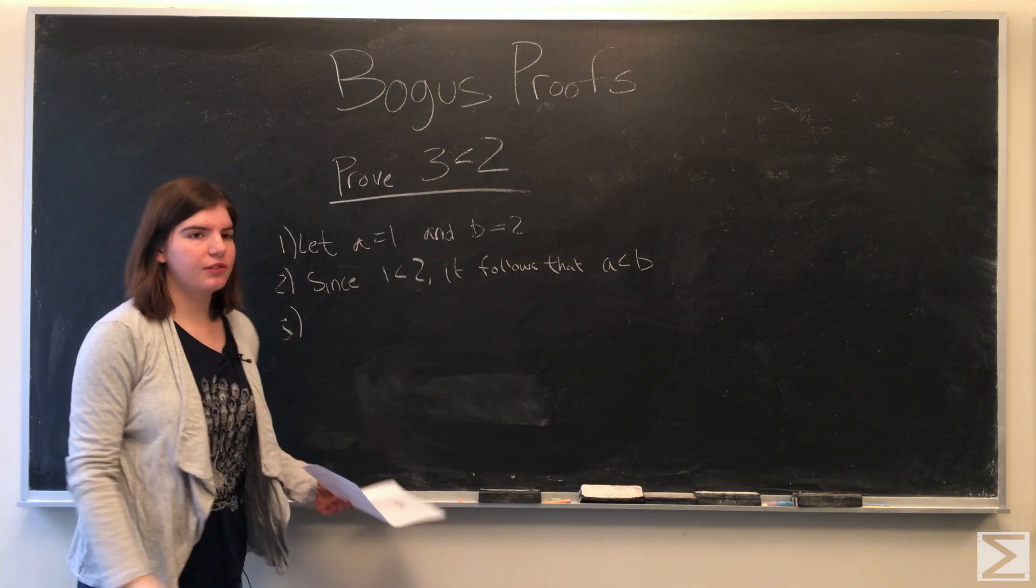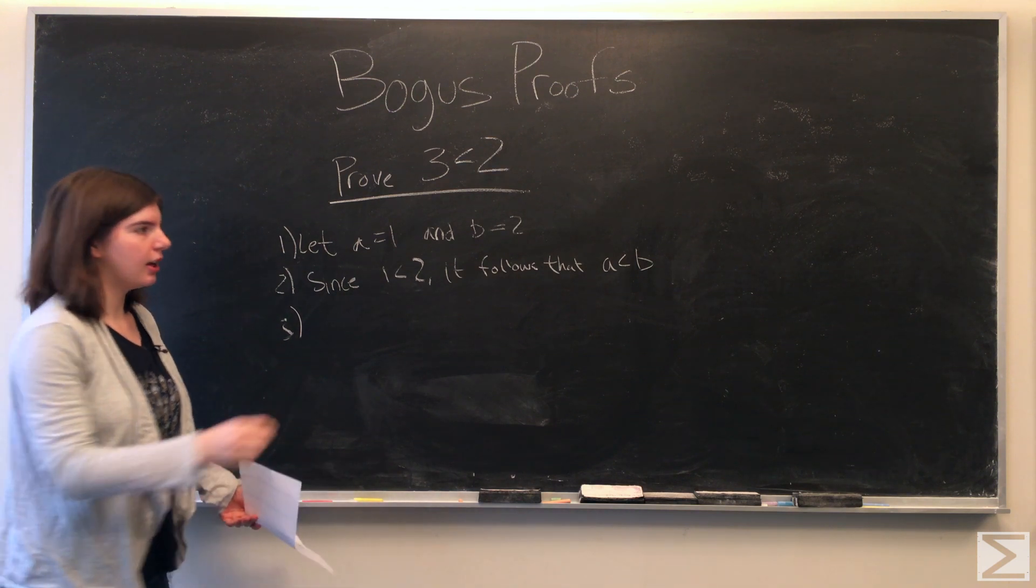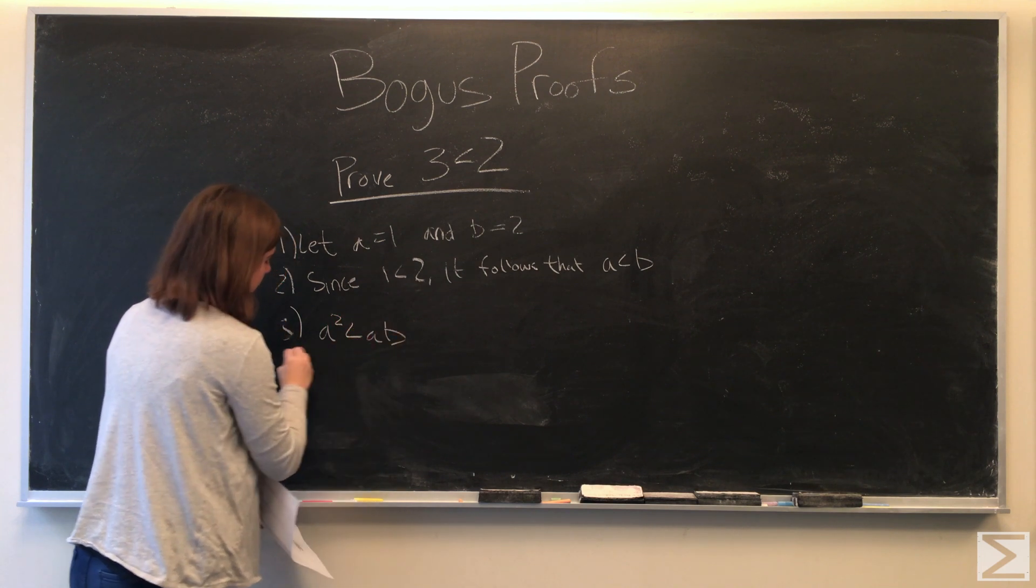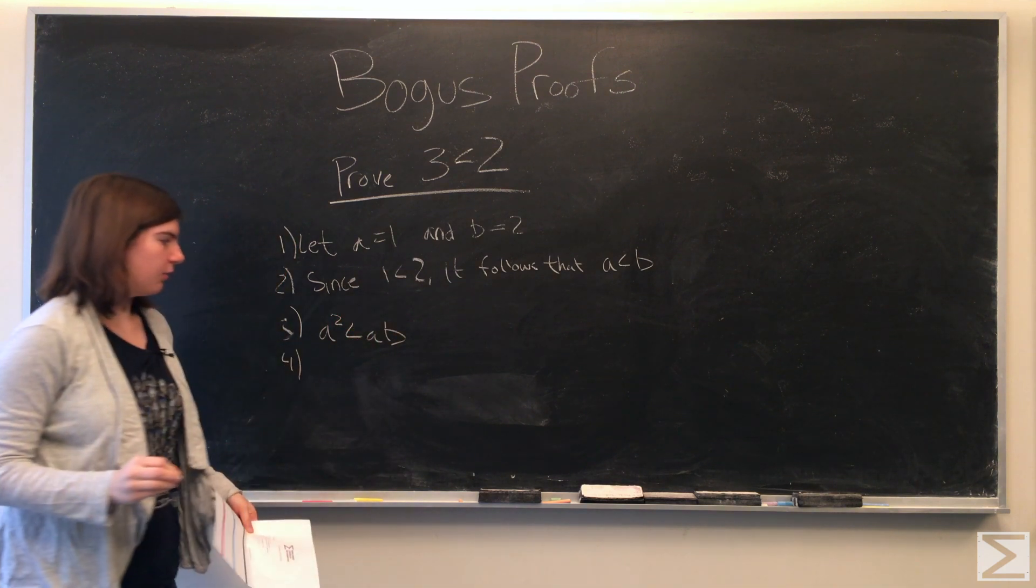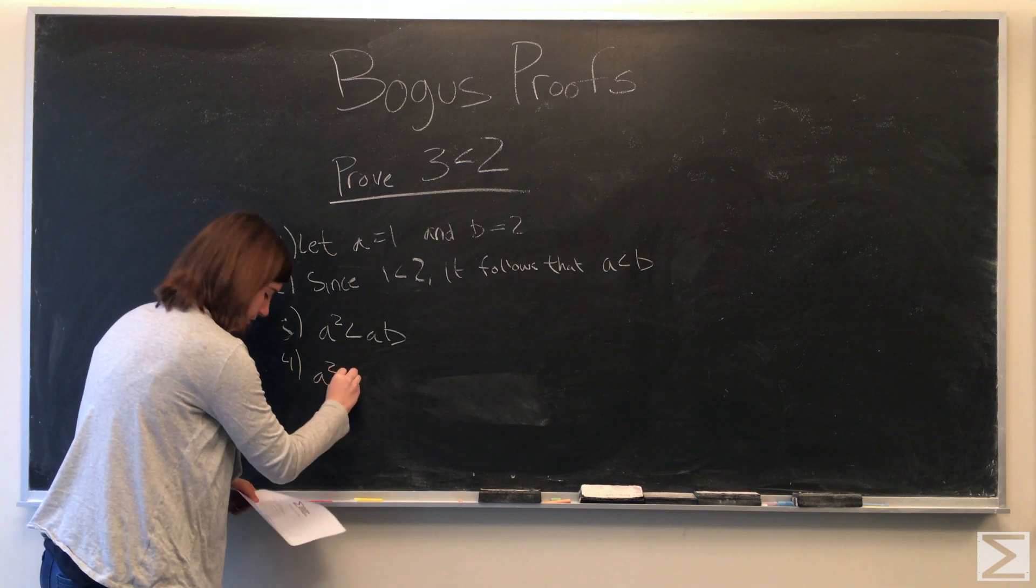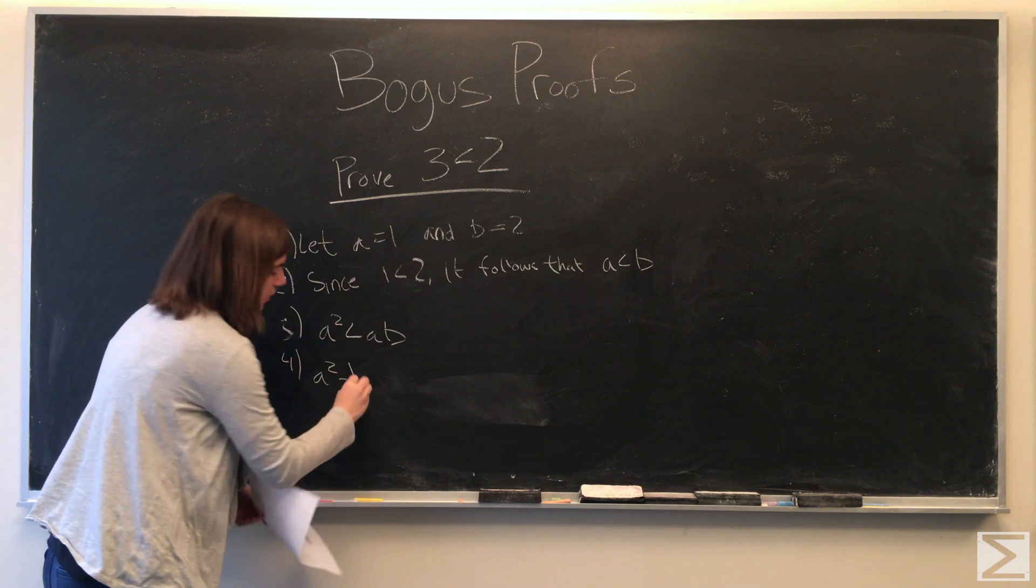We're going to multiply both sides of the inequality by A to get A squared is less than AB. Then we'll subtract B squared from both sides.